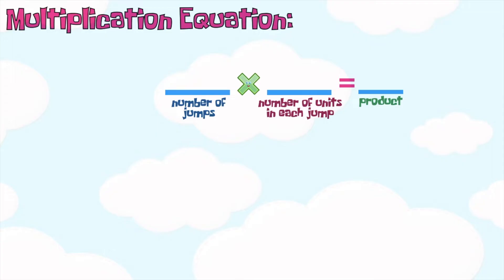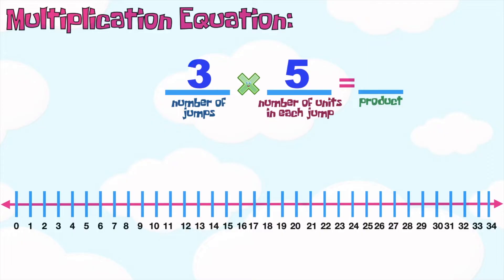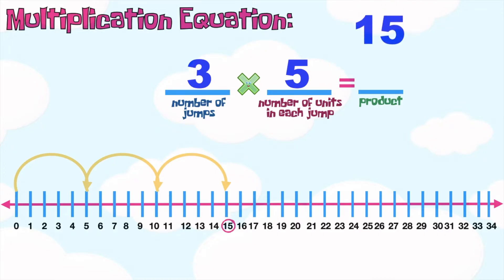How about if we have this? Three times five is equal to blank. Let's find the product using the number line. As you can see, children, we have three jumps, and in each jump we have five units. So the first jump will land at five. Let's keep counting by five until we reach the third jump: five, ten, fifteen. So that means the product is fifteen. We have three times five is equal to fifteen.